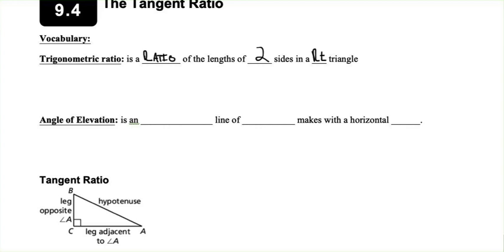If we have a right triangle, any trig ratio deals with the two side lengths — the two leg lengths of the triangle. We're not dealing with the hypotenuse just yet, but you can use the hypotenuse for certain trig ratios. For the most part, we're dealing with the sides of the right triangle.